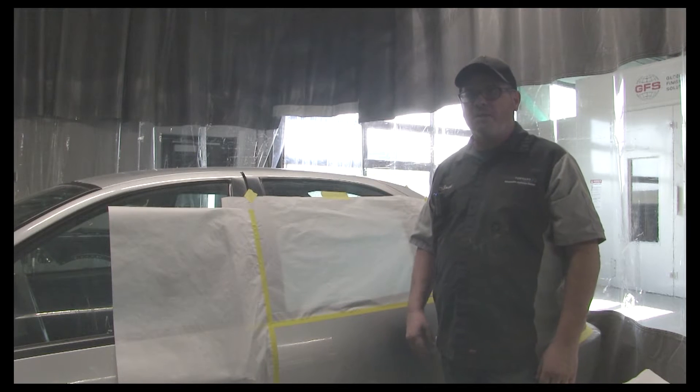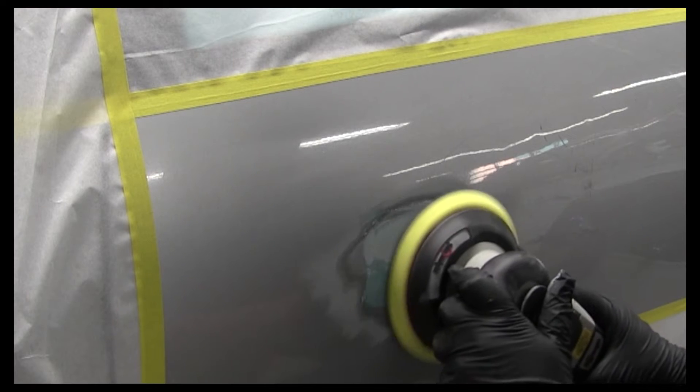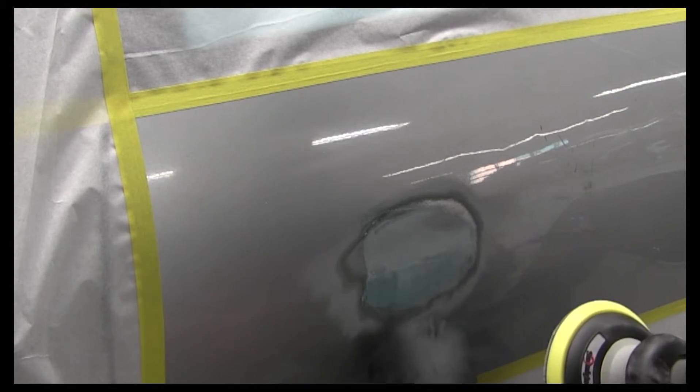In this video, I'm going to show you how and what grits to use to remove paint, fill and sand body filler, and to feather edge it to get it ready for priming and block.